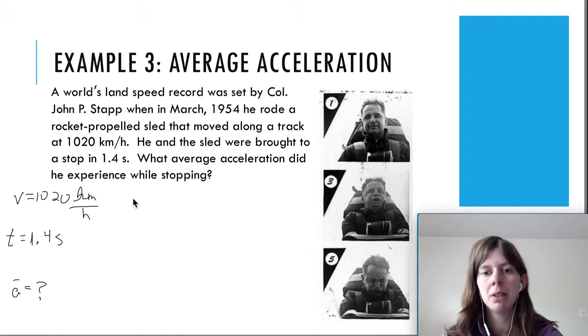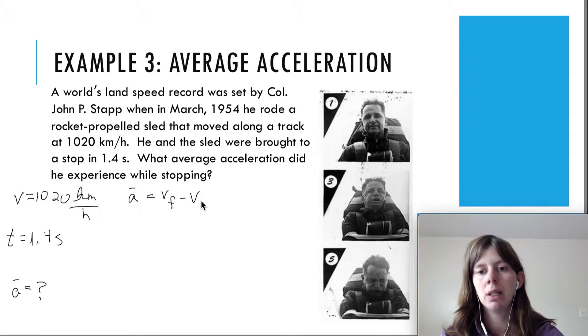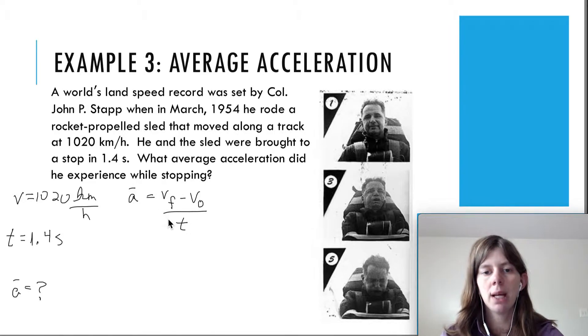And then you're going to figure out what you're looking for, the average acceleration. You're going to write down a relevant equation, which is the one that we just talked about, that your acceleration is your change in velocity over time. And then you're going to realize, wait a second, I don't have enough information here. I need V final and V initial. So, then you go back and look at the problem and say, okay, well this right here, this 1020, this was actually his initial velocity.